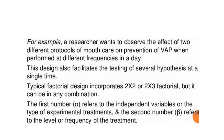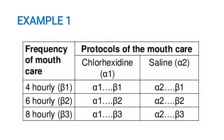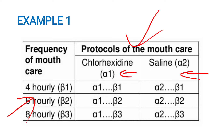The first factor we can consider as alpha and the second factor we can consider as beta. In the above example, the different mouth care solutions can be considered as alpha, and the duration or frequency of the treatment protocol is considered as beta. Alpha is the protocols of mouth care — alpha 1 is chlorhexidine mouthwash solution and alpha 2 is saline mouthwash solution. Beta is the frequency of mouth care.